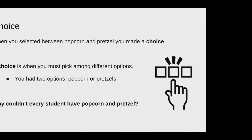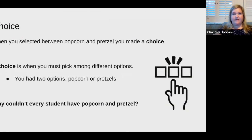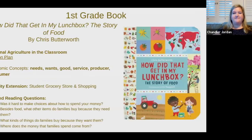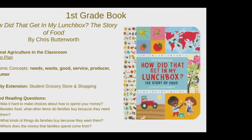At the first grade level, the book is How Did That Get In My Lunchbox? The Story of Food by Chris Butterworth. The economic concepts going to be taught are needs and wants, goods and services, producers, and consumers. I really like this book because there are so many extension activities you can do with it.